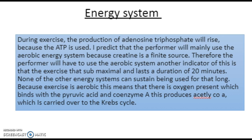Energy systems during steady state exercise: during exercise the production of adenosine triphosphate will rise because ATP is used. I predict that the performer will mainly use the aerobic energy system because creatine is a finite source. Therefore the performer will have to use the aerobic system. Another indicator is that exercise is submaximal and lasts a duration of 20 minutes, and none of the other energy systems can sustain being used for that long. Because exercise is aerobic, there is oxygen present which binds with pyruvic acid and coenzyme A, producing acetyl-CoA which is carried over to the Krebs cycle.